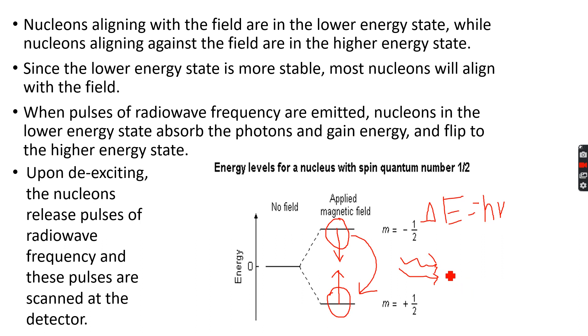These frequency values are converted into something called chemical shift. Because the values of frequency are really large, it's difficult to get them on a scale since we'll be eventually plotting a spectrum.